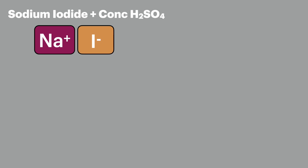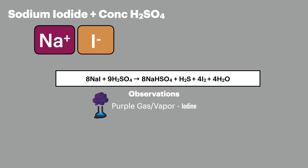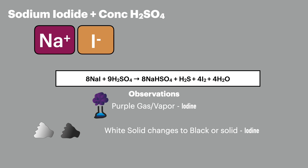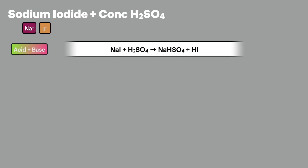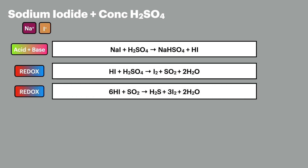The final equation to look at is sodium iodide. There have been exam questions asking you to explain this reaction and to provide half equations. First, in this reaction you're going to see the purple gas of iodine being produced. You'll also see the white solid sodium iodide changing to a black or gray solid — this is iodine that won't have turned into a gas. And finally you'll detect the bad egg smell of hydrogen sulfide being produced. The reaction starts similarly to sodium bromide, but because the iodide ion has a greater reducing ability it reduces the sulfur all the way down to hydrogen sulfide.